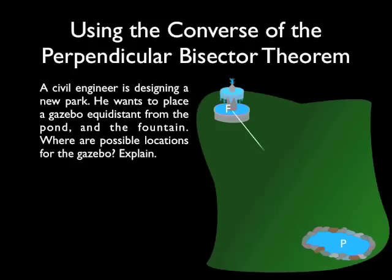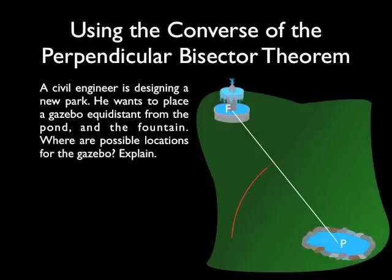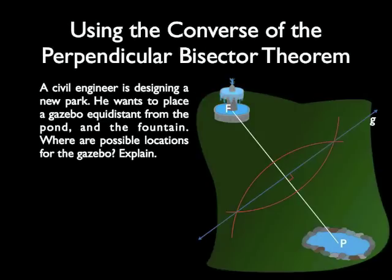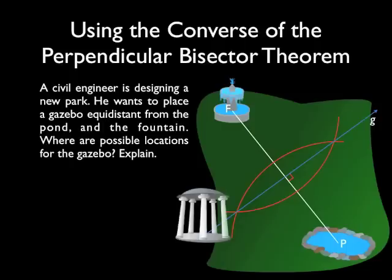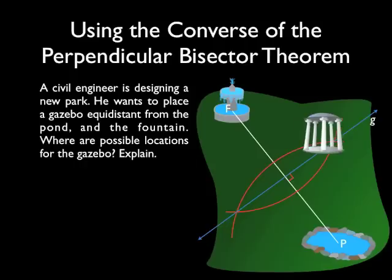So let's go ahead and draw a segment between those two. Since we know how to do constructions, we can quickly construct the perpendicular bisector to segment FP. Here we have line G that is the perpendicular bisector of segment FP, and the gazebo can go anywhere along line G.